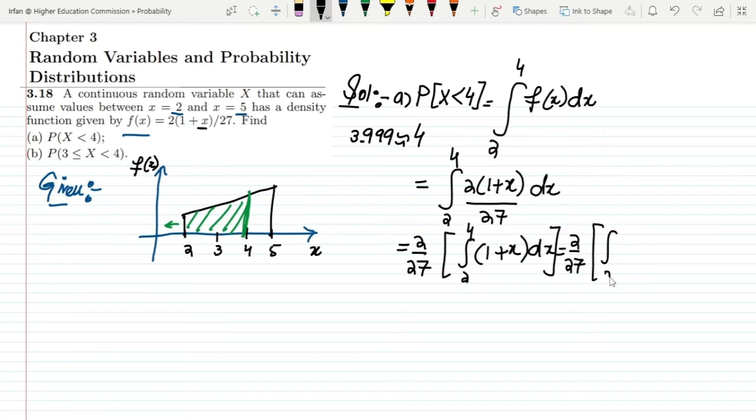What we will have is the integral from 2 to 4 of 1 dx plus the integral from 2 to 4 of x dx. Now simplifying it, solving it, what we will get here is 2/27, and the values here we will have [x] from 2 to 4, and here I will have x²/2 and the values are here again 2 and 4.